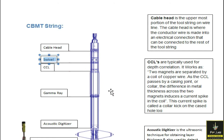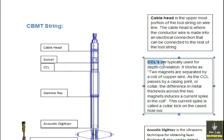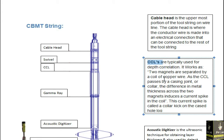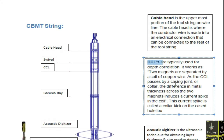This is the CCL — the Casing Collar Locator. It is used to detect the collars available inside the casing and is typically used for depth correlation of the logs. It works with two magnets separated by a coil of copper wire. As the CCL passes the casing joint or collar, the difference in metal thickness across the two magnets induces a current spike in the coil, called a collar kick.